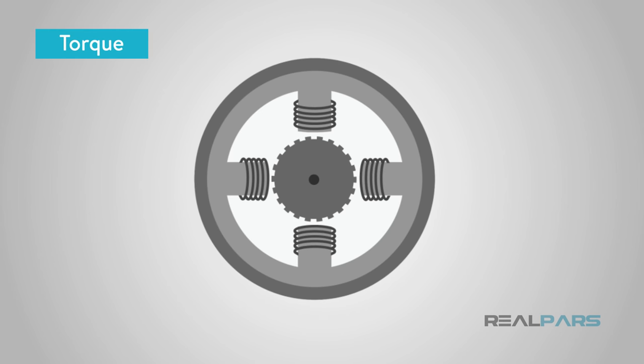What is torque? Torque is the tendency of a force to rotate an object about an axis, fulcrum, or pivot. Just as a force is a push or a pull, a torque can be thought of as a twist to an object or the rotation of the stepper motor rotor.